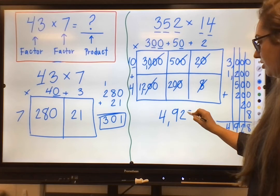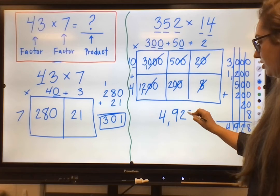So our final answer would be 4,928. So those are just two different strategies of the ways that you can solve multiplication problems that we see a lot in 5th grade. I hope these have proved to be a little helpful for you in learning these different strategies. But yeah, thanks for watching!